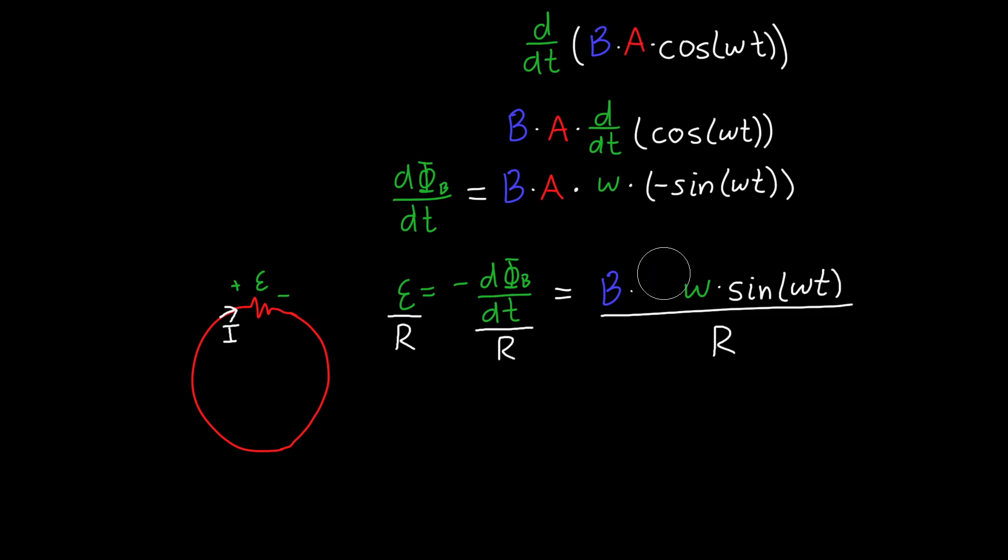If we want we can simplify this or desimplify it, because the area of a loop is pi times a squared. So this would be our final answer in terms of the initial variables that we had for the induced current.